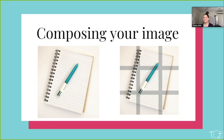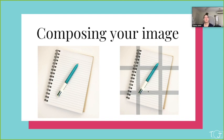He experimented with splitting his image up into different proportions but found that the third was the most pleasing. So a few centuries later, we have this grid which is available as an overlay on most cameras, including your iPhone. It's really simple to use — we place the most important part of our image on the crosses. You can see here that I've taken the pen, which is my product in this photo, and placed it leading from one cross to another.